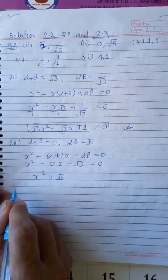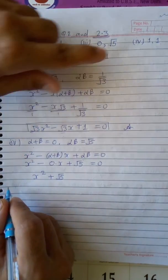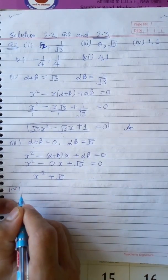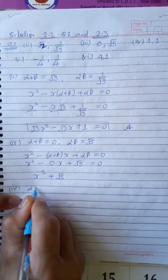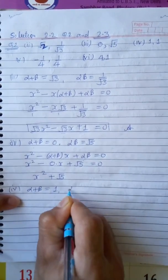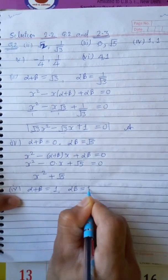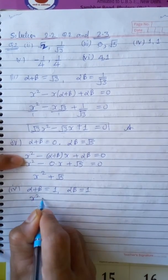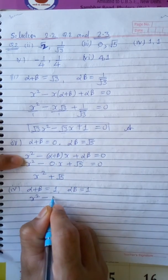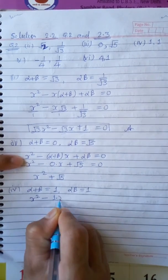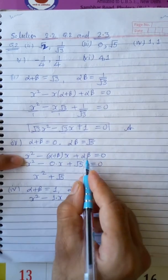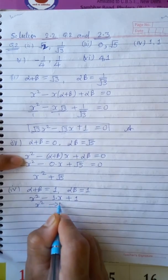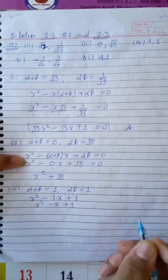Question number 4: alpha plus beta equals 1 and alpha times beta equals 1. Substituting directly: x squared minus (1)x plus 1 equals 0, which gives x squared minus x plus 1 equals 0. This is the solution for question 4.